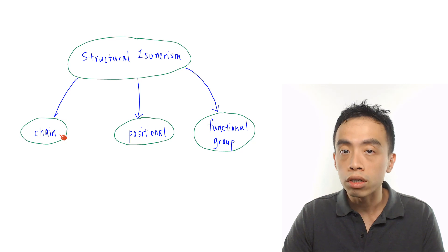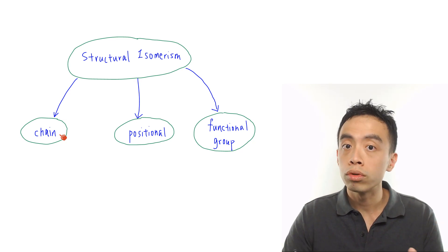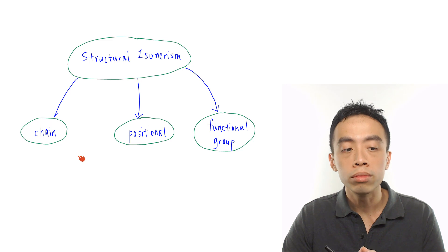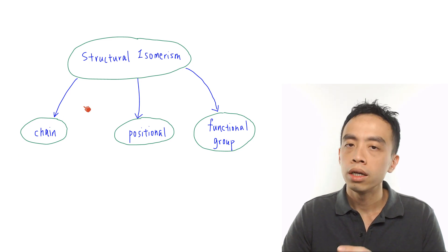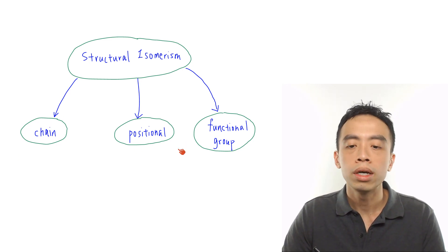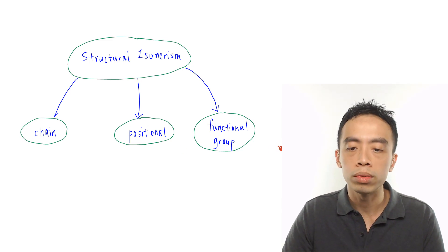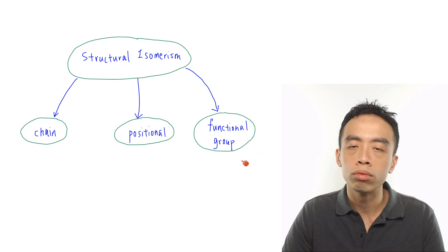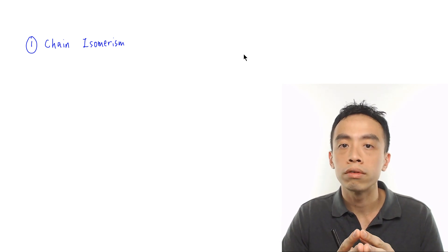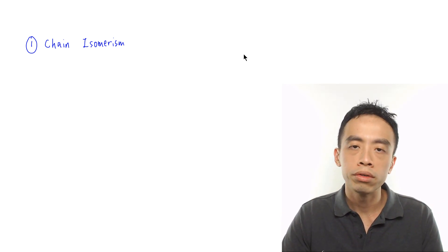We have three different types of structural isomerism, and we will go through them part by part. The first type is chain isomerism, the second type is positional isomerism, and finally the third type is functional group isomerism. Now let's look at the first type, which is chain isomerism.